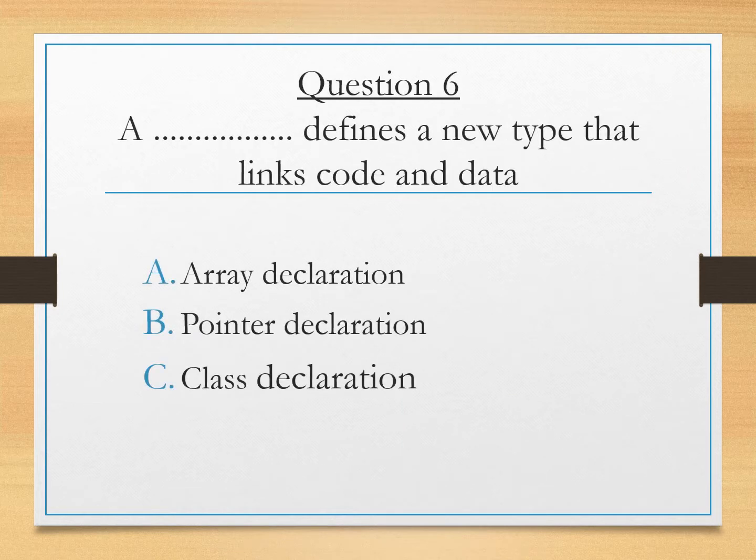Question number 6. A dash defines a new type that links code and data. Array is something which have multiple values. Pointer is something which contains address of some particular variable. And class is a combination of both data and member functions. Or you can say functions. So we are looking for a type that links code and data. Means you are just linking your code with the data. So it is actually pointing to some memory location. So the variable which points the address to some memory location is known as pointer. Right? So answer will be the pointer declaration.